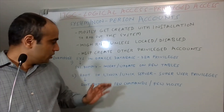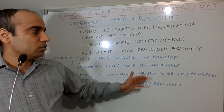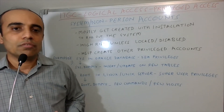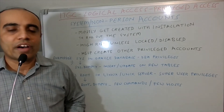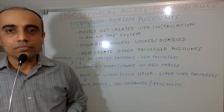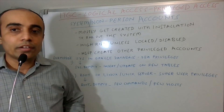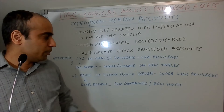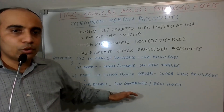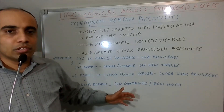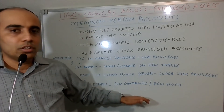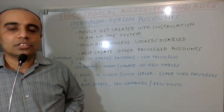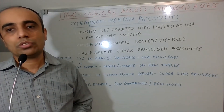Another example is the root account in Linux and Unix servers — it has super user privileges. Everybody who understands Linux and Unix will completely agree that root is the most powerful account. You can create another non-person account — in this case, an account named root_dummy — which has the ability to run only a subset of privileges, like certain commands on certain hosts.